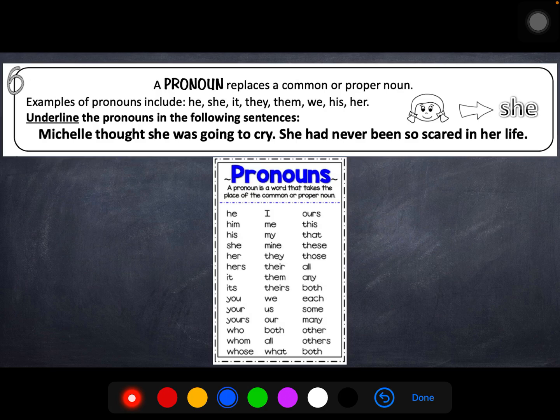So number six is going to have us look at pronouns. Which conveniently we looked at last week when we were talking about point of view. So a pronoun replaces a common or proper noun. Examples of pronouns include he, she, it, they, them, we, his, her. And all of those are on this list as well. It says underline the pronouns in the following sentence. Michelle thought she was going to cry. She is referring to Michelle. She is also referring to Michelle. Had never been so scared in her life. Now I just made a mistake you guys. I know it's not a big deal. But the directions say to underline. So I need to go back and make sure that I'm following those directions. Because that way my teacher knows and I get in a really good habit of following directions.